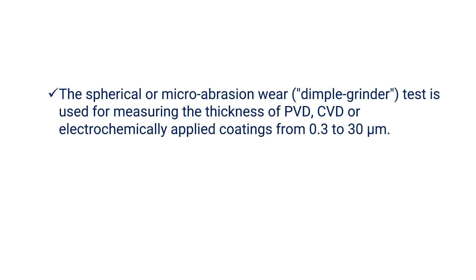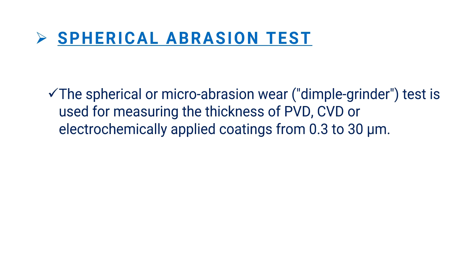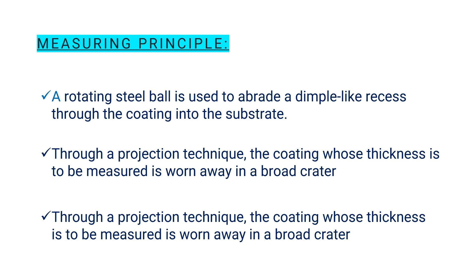Spherical abrasion test. The spherical or micro-abrasion wear test is used for measuring the thickness of PVD, CVD, or electrochemically applied coatings from 0.3 to 30 micrometers. Measuring principle: a rotating steel ball is used to abrade a dimple-like recess through the coating into the substrate. Through a projection technique, the coating whose thickness is to be measured is worn away in a broad crater. This crater is then measured accurately and the coating thickness calculated. The equipment used for this is called the Calo Test.